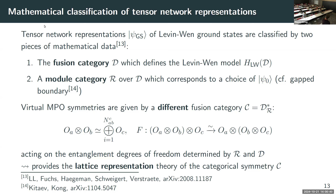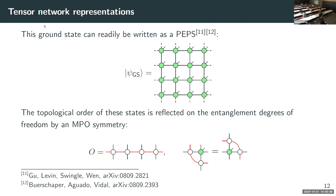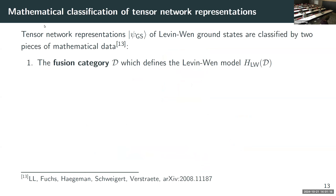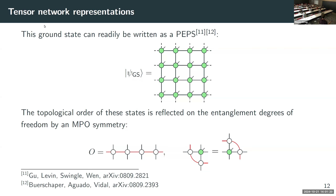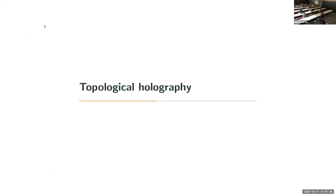When I say 'entanglement degrees of freedom,' I mean these virtual degrees of freedom that build up the tensor network — the legs that are not the physical legs. In a 2D tensor a tensor might have five legs; one is the physical leg corresponding to an actual basis vector in the Hilbert space, and the other four are virtual or entanglement degrees of freedom sitting on the links. It's just a name referring to the degrees of freedom sitting on the links, not a statement about entanglement theory itself. This classification gives you all the different ways in which you can realize a categorical symmetry on the lattice.